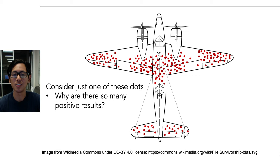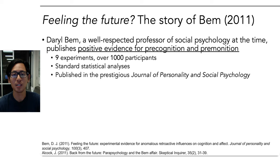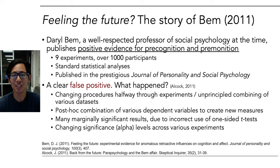Let's consider why there are so many positive results. This is a famous story in psychology — Daryl Bem in 2011 published a study called 'Feeling the Future.' Bem was a well-respected professor of social psychology who believed he had found positive evidence for precognition and premonition — the ability to sense what was going to happen in the future. It seemed like a typical experiment: nine studies, over a thousand participants, standard statistical analyses like t-tests and ANOVAs, published in the prestigious Journal of Personality and Social Psychology. But this cannot be true — it's clearly a false positive.